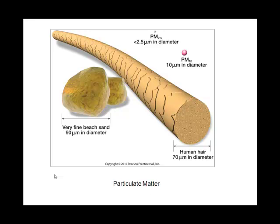This figure shows some particulate matter sizes. Relatively speaking, we have 90 microns — the size of beach sand — and 80 microns, the diameter of a human hair. To put things in perspective, when we're talking about pollutants that are PM2.5, or less than 2.5 micrometers, that's how small they are, and 10 micrometers as well.